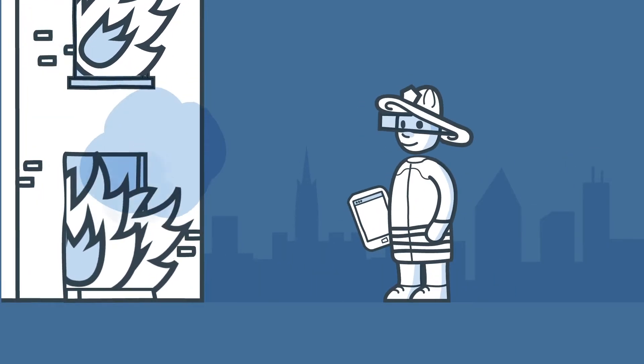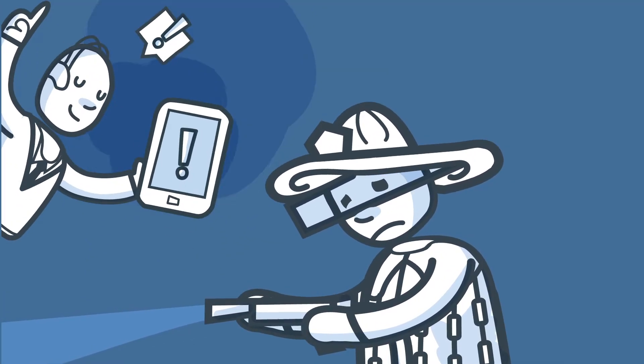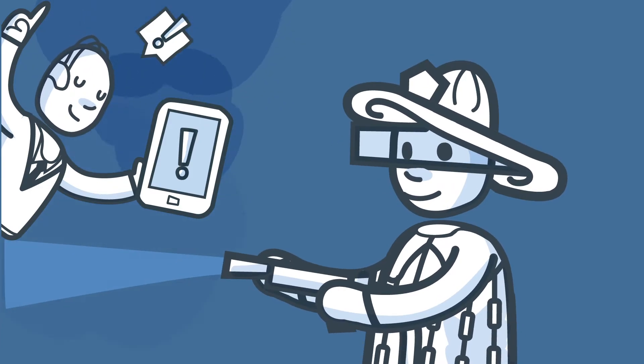Thanks to sensors in the floors and walls, a fireman knows if there are still people inside. And his shirt can notify his boss when he's exhausted, so he can be called back on time.